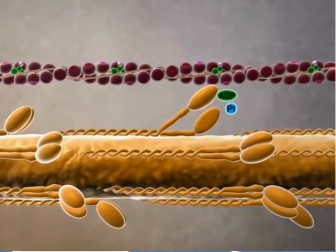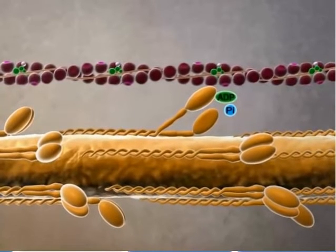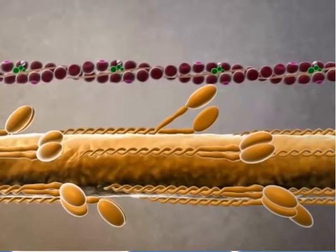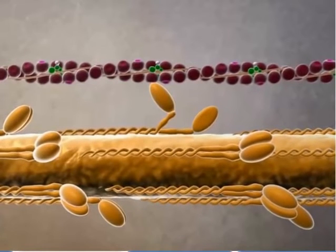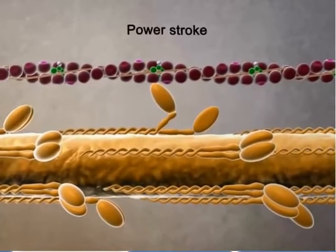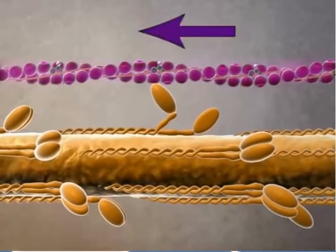In the next step, ADP and phosphate are released. Their energy powers the movement of the myosin head. This step is called the power stroke. Actin moves toward the center of the sarcomere.